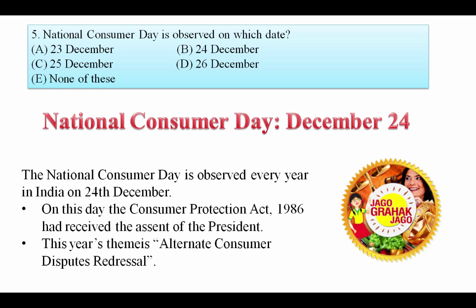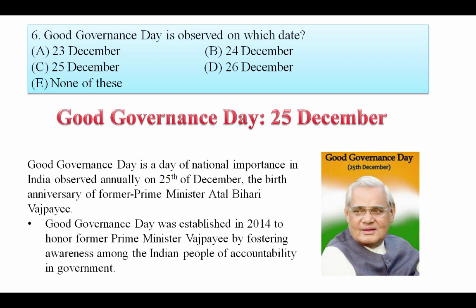National Consumer Day is observed on which date? National Consumer Day is observed every year in India on 24th December. The theme of this year is 'Alternate Consumer Dispute Redressal'. Your answer is B. Good Governance Day is observed on which date? Good Governance Day is a day of national importance in India observed annually on 25th December, the birth anniversary of former Prime Minister Atal Bihari Vajpayee. It was established in 2014 to foster awareness of accountability in government. Your answer is C, 25th December.